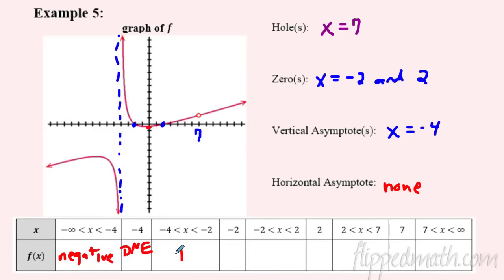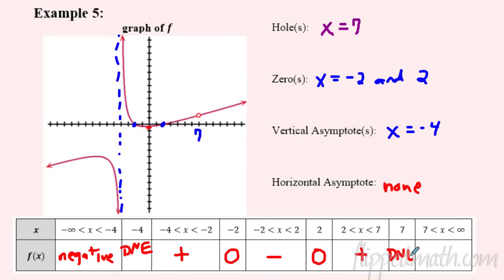At x = -2 we hit a zero. From negative two to two the function is negative. At x = 2 it's back to zero. From two to seven it's positive. At x = 7 there's a hole, so it's undefined. From seven to infinity it's positive. This sign table is helpful later when you have to analyze a graph without seeing it. Good luck on the practice!